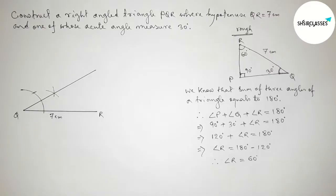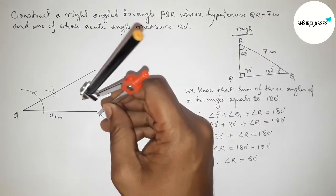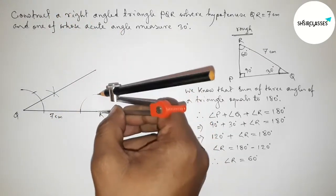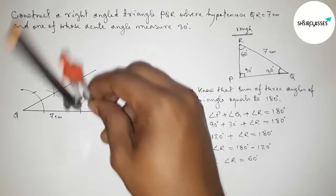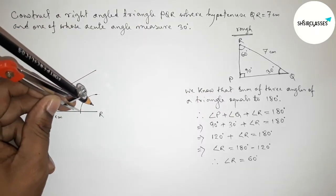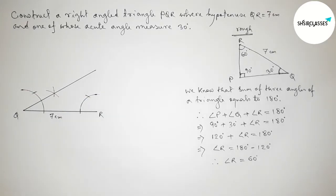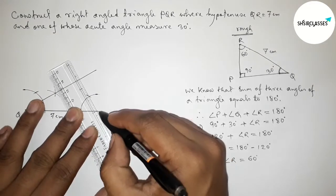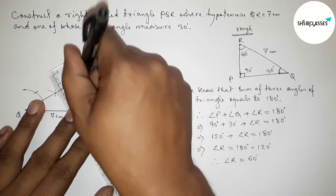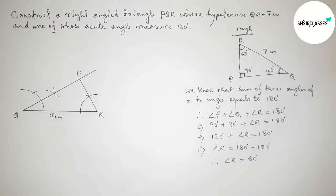Similarly, we have to draw a 60 degree angle at point R with the help of a compass. Putting the compass at R, taking any length, and drawing an arc. Then taking the same length and cutting the arc, and joining the line to get a 60 degree angle. Both lines meet at a point — taking that as point P.